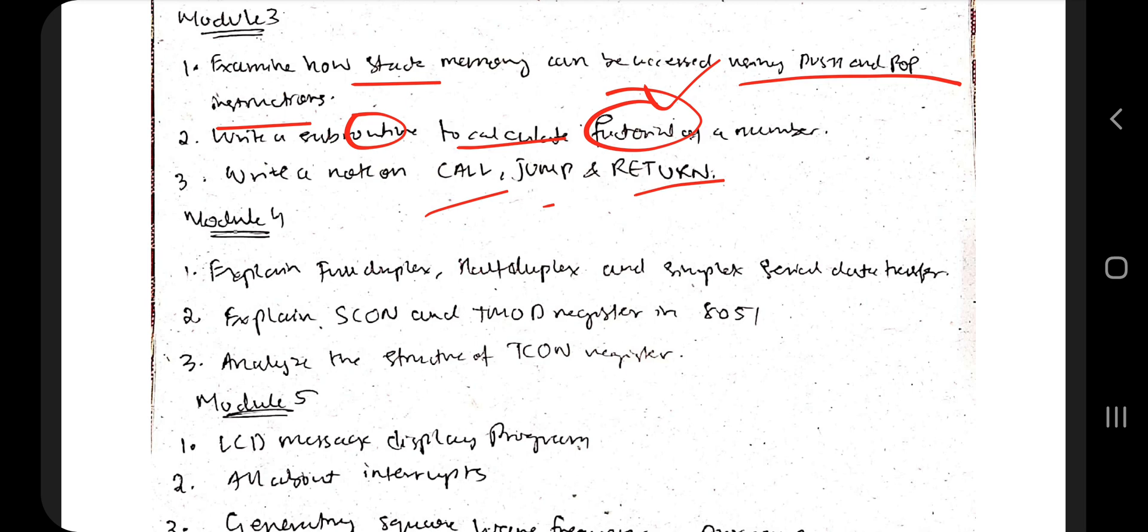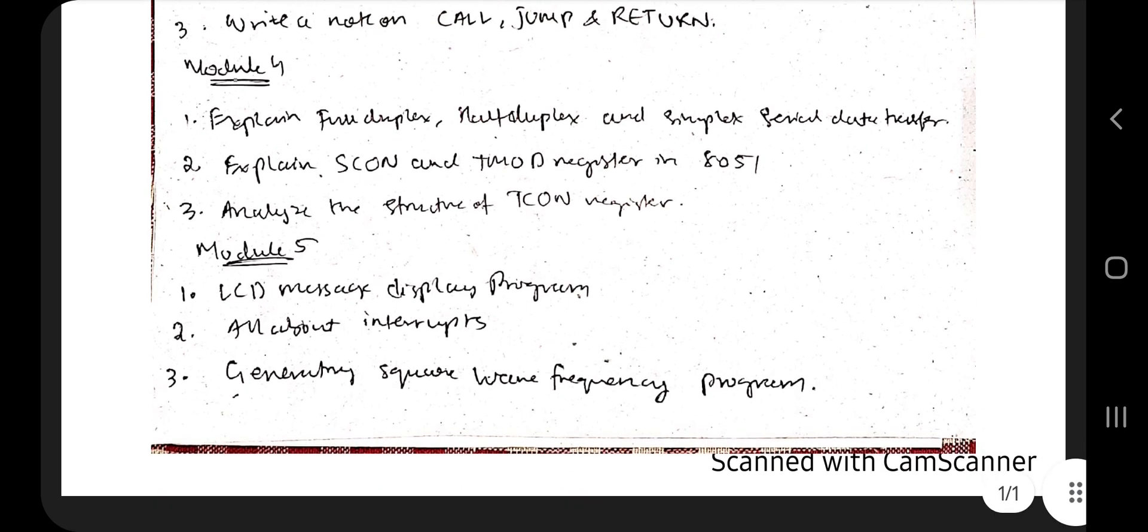Coming to Module 4, we have full duplex, half duplex, and simplex. There are many programs, so the theory is very less. The theory I found in the previous three papers is SCON, TMOD, and TCON. These three are the registers in 8051 - the structure of it, those things you have to analyze and memorize. There are many programs as well. If you go to the previous papers, you'll get many programs - memorize as many as you can.